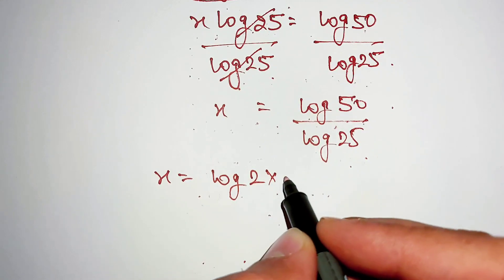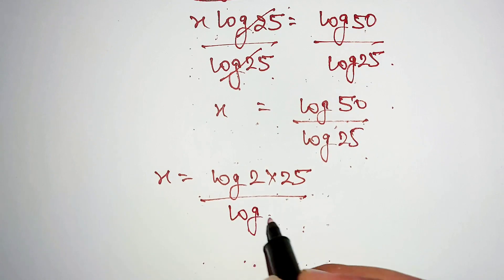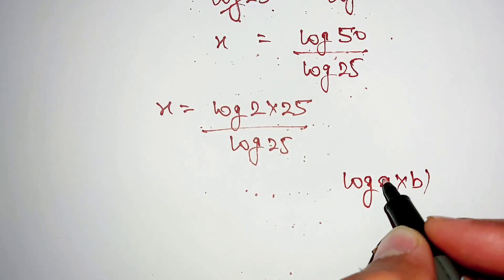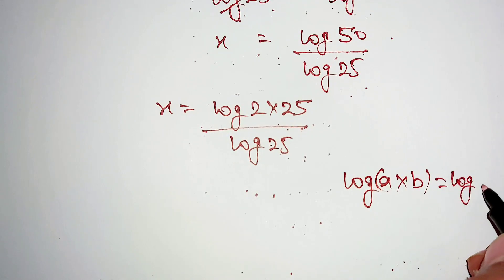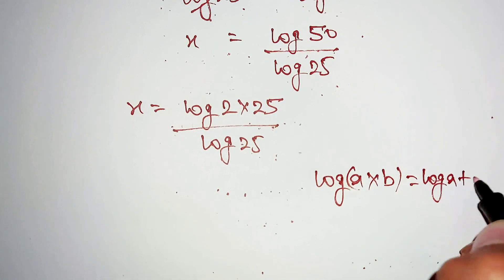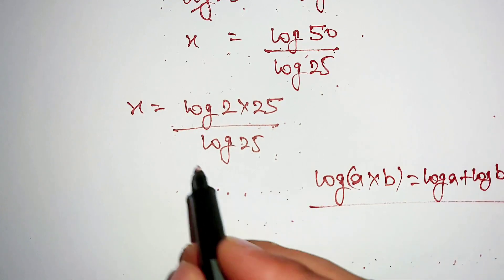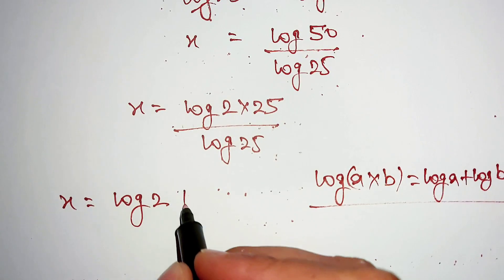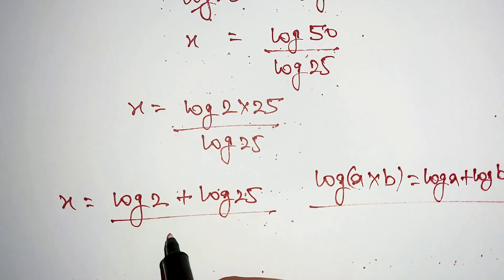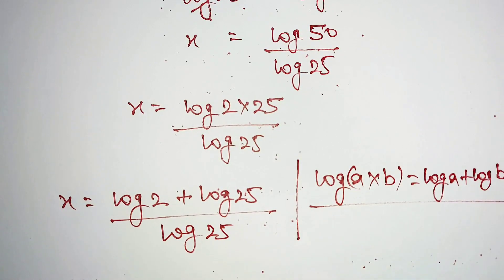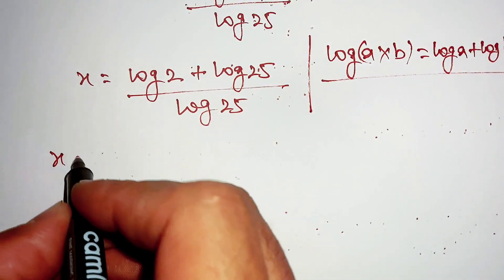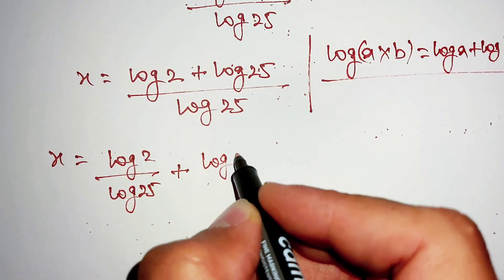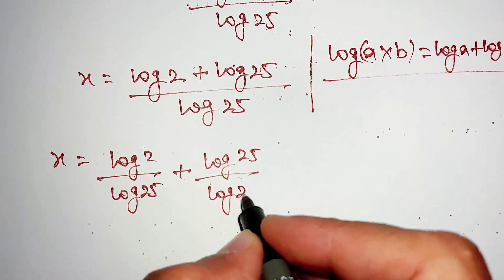Now log 50 can be written as log of 2 multiplied by 25. We use the formula log a multiply b equal to log a plus log b. Applying this formula, x equals log 2 plus log 25, all divided by log 25.